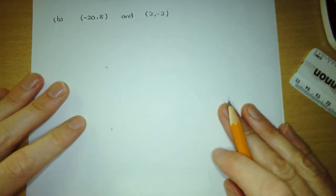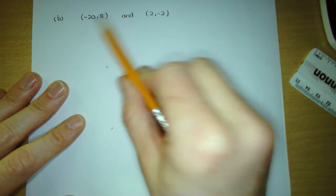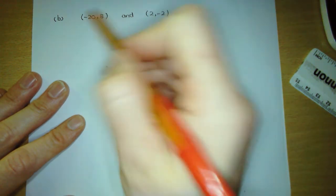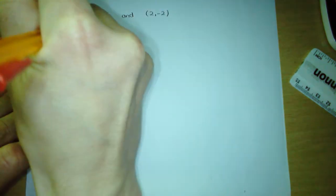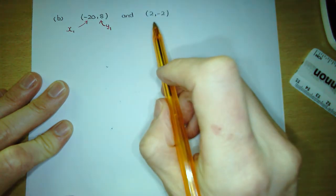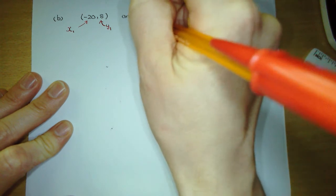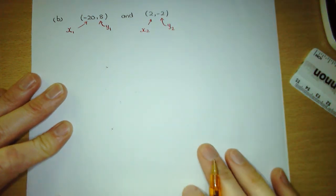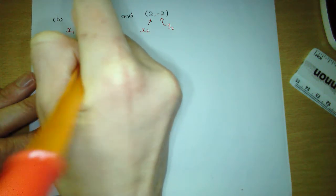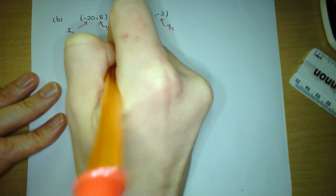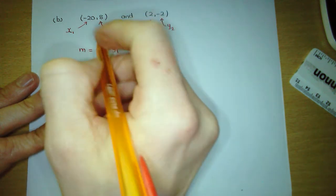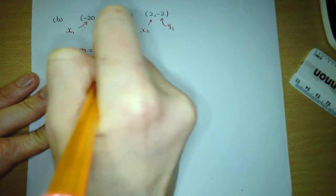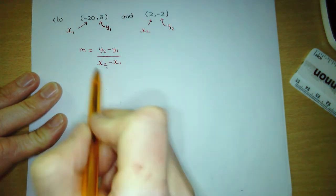Example B — again, it's the same example B we did in the last lesson, except we're using the formula method. We want to find the gradient of the line joining these two points. We label the x coordinate x1 and the y coordinate y1 for point one. For point two, we label the x coordinate x2 and the y coordinate y2. We write out our gradient formula — which we need to learn: m equals y2 minus y1, the difference in the y coordinates (the rise), divided by x2 minus x1, the difference in the x coordinates (the run).